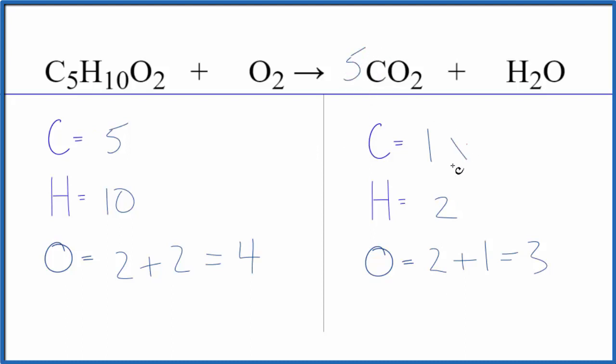And then let's update the oxygens here. We have five times two, so ten plus one, so now we have eleven oxygen atoms. Let's balance the hydrogens. We could just put a five as our coefficient here. Two times five, that gives us ten, so the hydrogens are balanced.